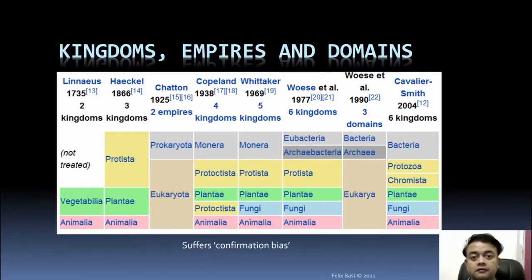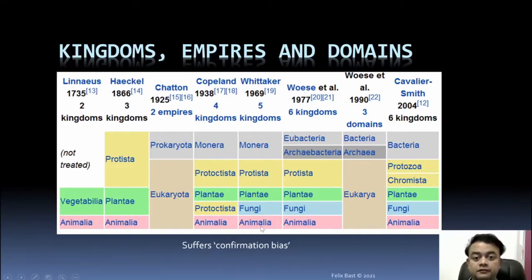In 1969, Whittaker's five-kingdom classification became perhaps the most well-known: Monera, Protista, Plantae, Fungi, and Animalia — five kingdoms of life.